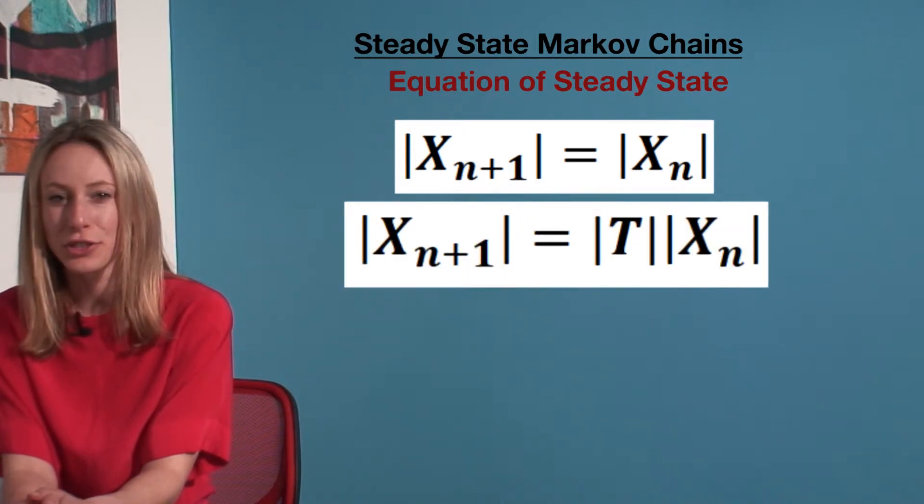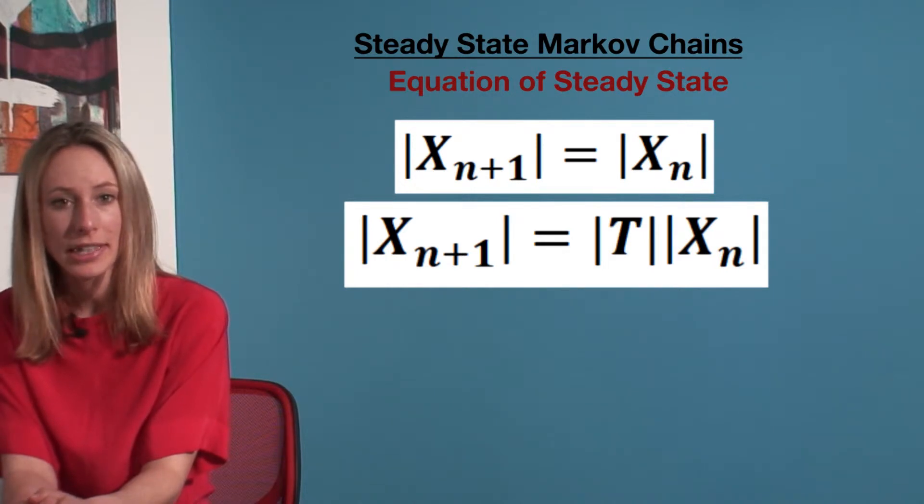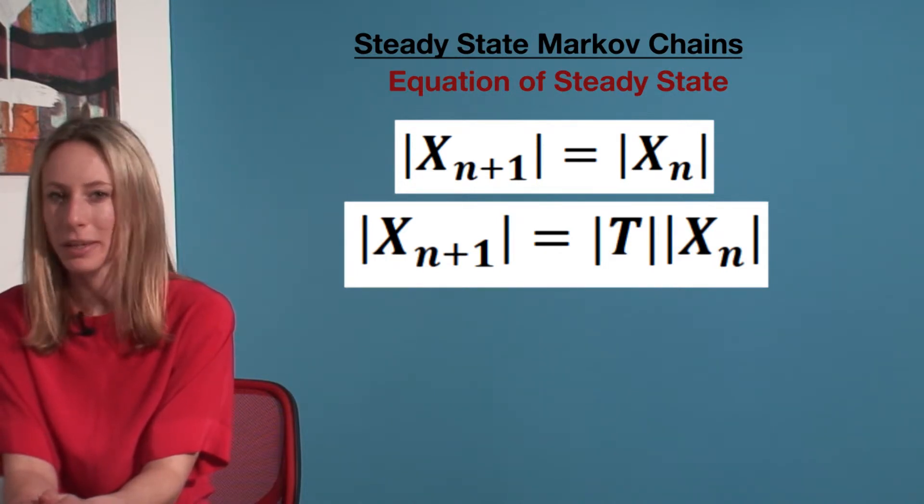If we look at our usual Markov chain probability calculation, the probability of the next period equals the transition matrix times the current period.